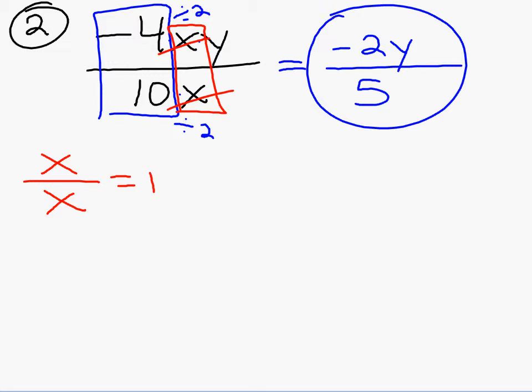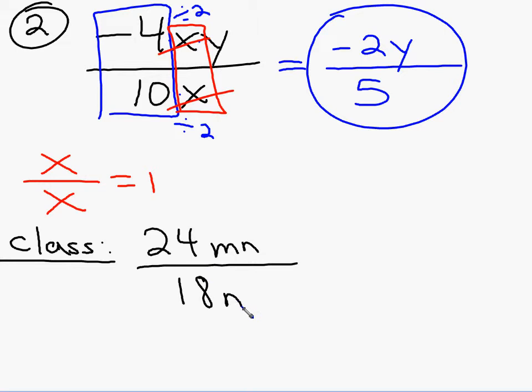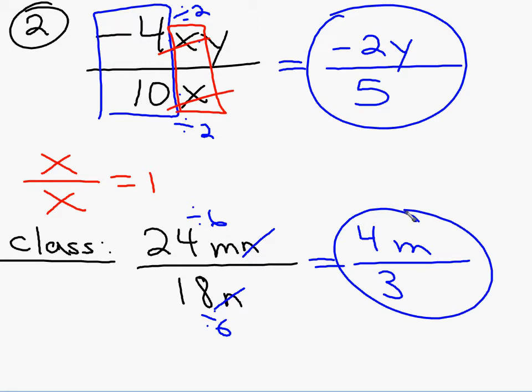Let me give you one to try on your own. We'll call this a class example. Simplify 24mn over 18n. I'm going to pause the video. We should have divided the top and bottom by 6, so 24 divided by 6 is 4, 18 divided by 6 is 3. I have this n over n, which I can slash out, and now I just have an m on top. There's my answer: 4m over 3.